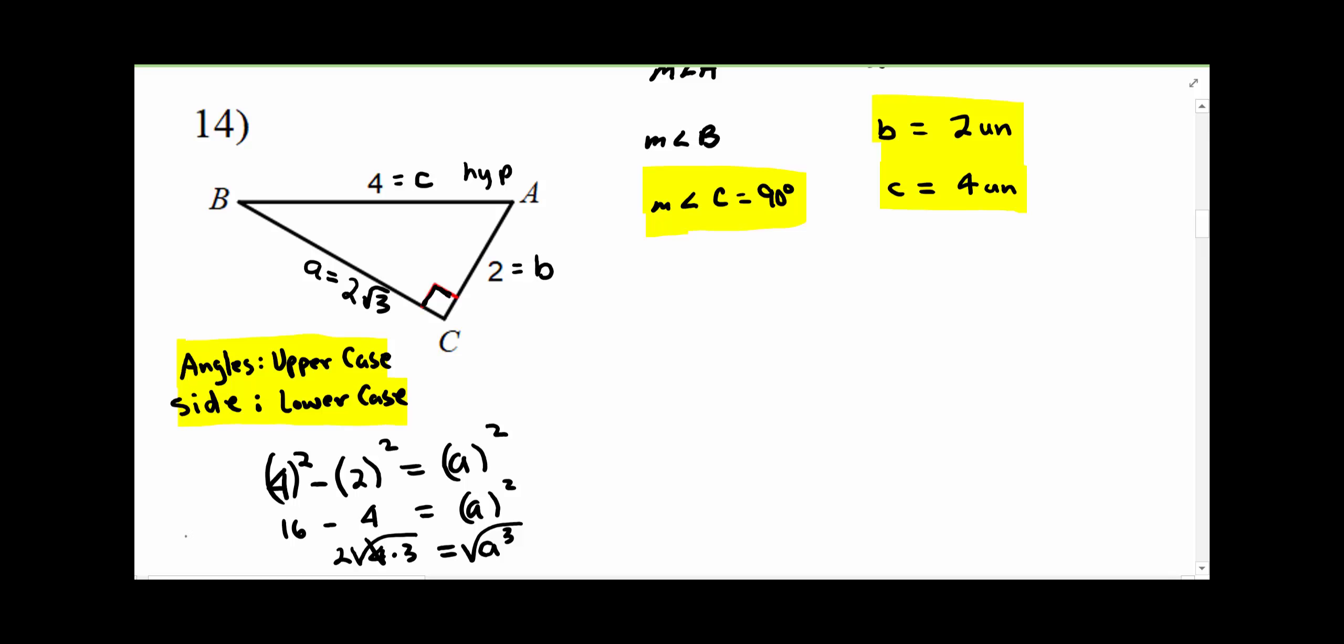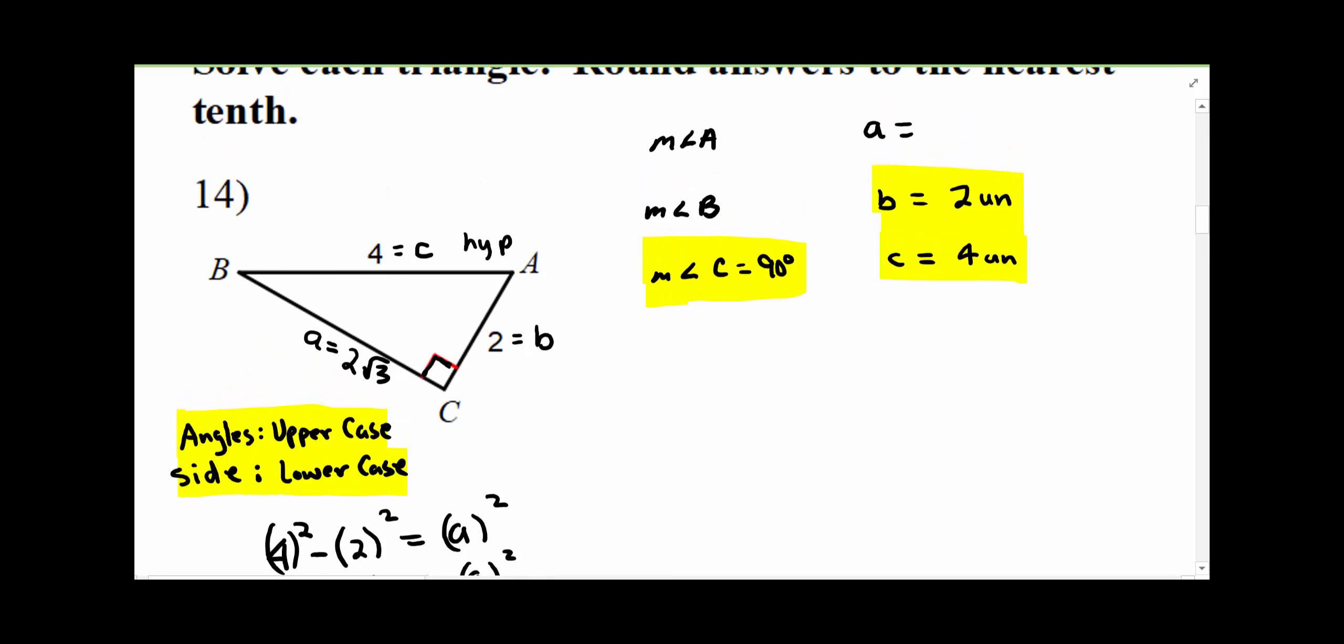And remember when you take the square root, there's both a positive and negative version. But since we're talking about a length, we can't have a negative length. So I know that side a is 2 root 3 units.